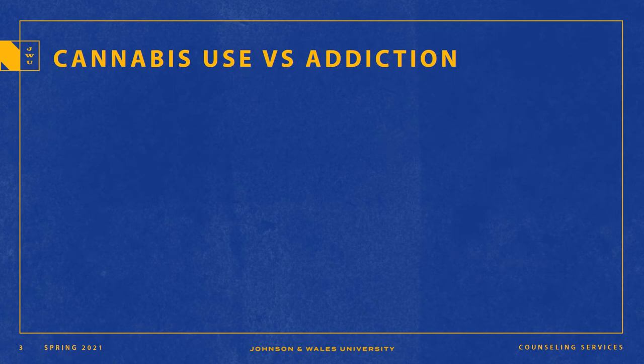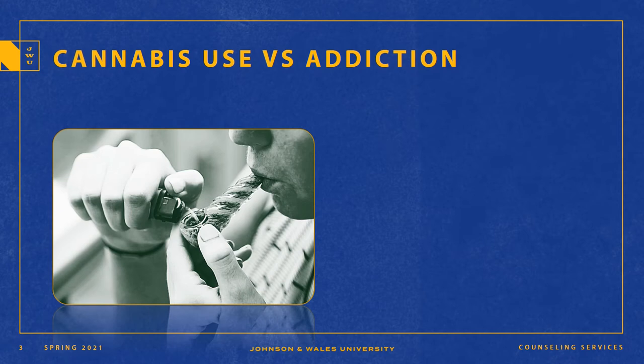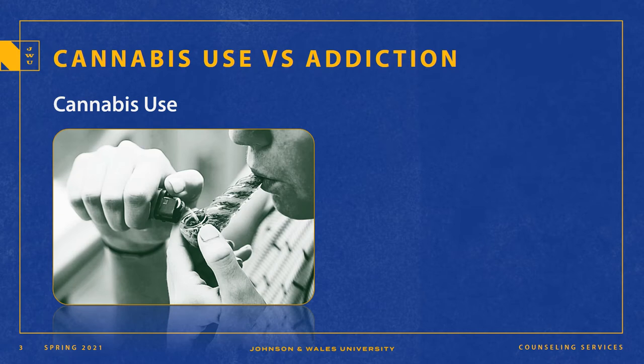Let's start by looking at the difference between cannabis use versus cannabis addiction or cannabis use disorder. Here on the left, we see a picture of somebody smoking out of a small pipe, using the minimal dose necessary of cannabis to get the desired effects. We don't know anything about this person's behavior or their relationship to cannabis, but we could use this as an example of recreational cannabis use. When I say recreational use, I think of somebody who smokes infrequently — once a month, once a year, when they see their friends from high school — and they don't really have any functional impairments from their cannabis use.